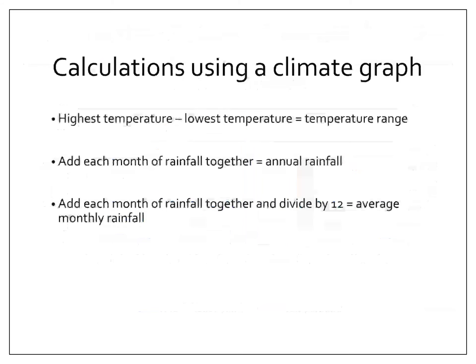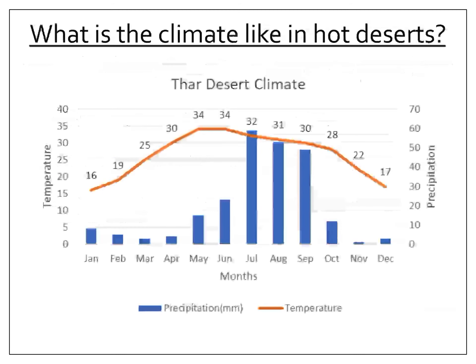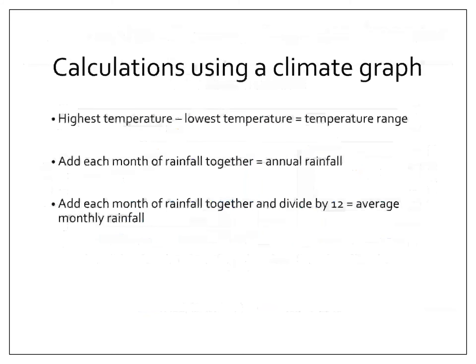If we wanted to work out the annual rainfall, we need to add each month of rainfall together. Look at the blue bars using the right-hand axis. Adding up each month: January is 8, plus February 5, plus March 3, plus 4, plus 15, plus 23, plus 59, plus 53, plus 49, plus 12, plus 1, plus 3. Our annual rainfall is 352 millimetres.